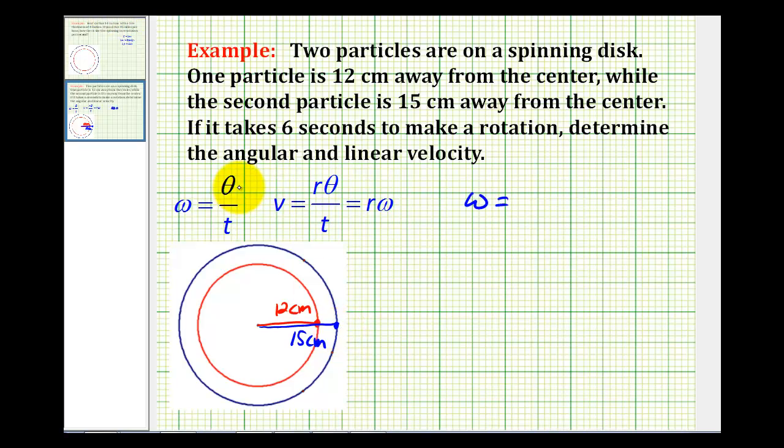And because it takes six seconds to make one rotation, one rotation would be a theta of two pi radians. And the time it takes is six seconds. So this simplifies nicely to pi over three radians per second.